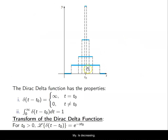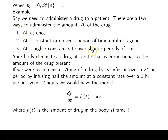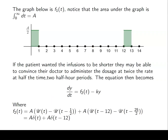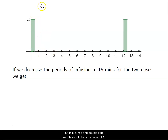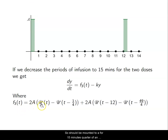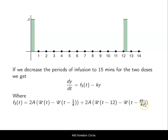As the period decreases, the height grows larger. We can reduce the infusion further — from half an hour to 15 minutes. Again, cut in half and double: administer 2A over a quarter hour (t=0 to t=0.25), and again at t=12 to t=12.25. In Dirac-Delta form, it's still delta(t) and delta(t-12) — only the start times matter; the administered value dictates the interval length.